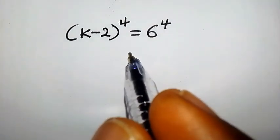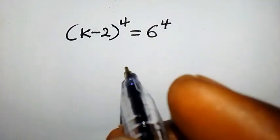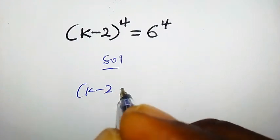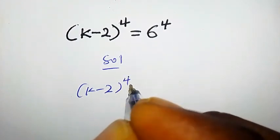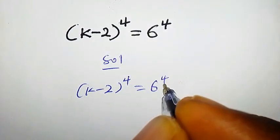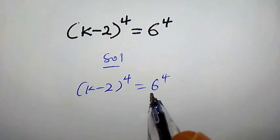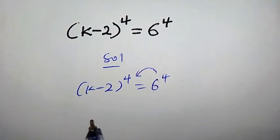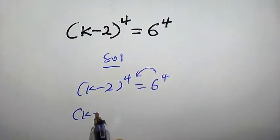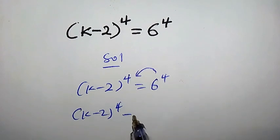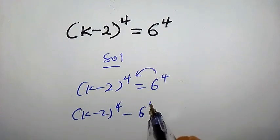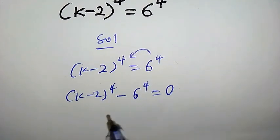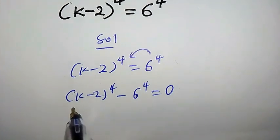Hello. How do we solve for k in this equation? We have k minus 2 to the power of 4, equal to 6 to the power of 4. The first step we are going to take is to transfer this term to the left side, so we are going to have k minus 2 to the power of 4 minus 6 to the power of 4 equal to 0.